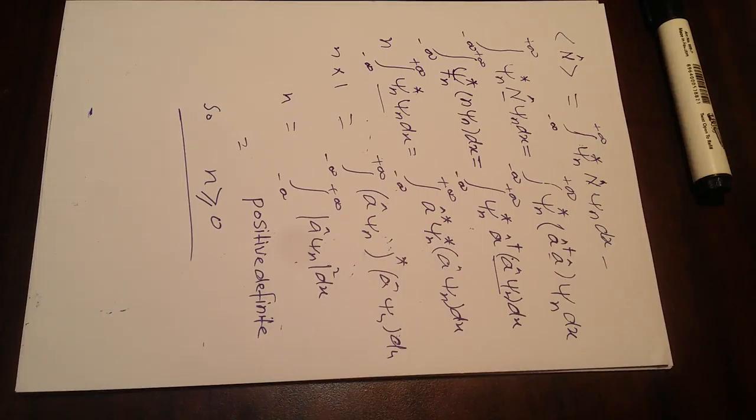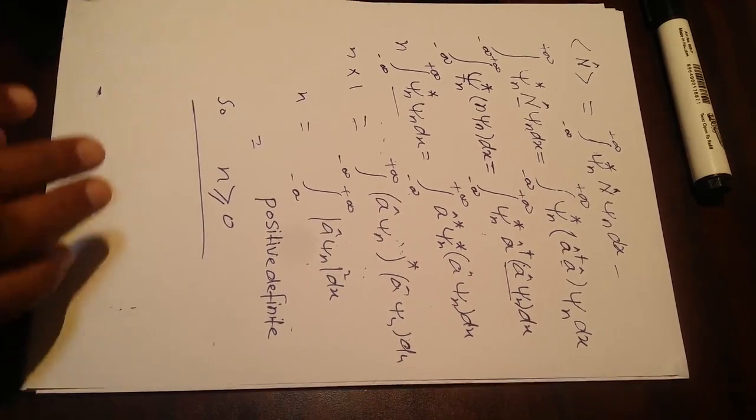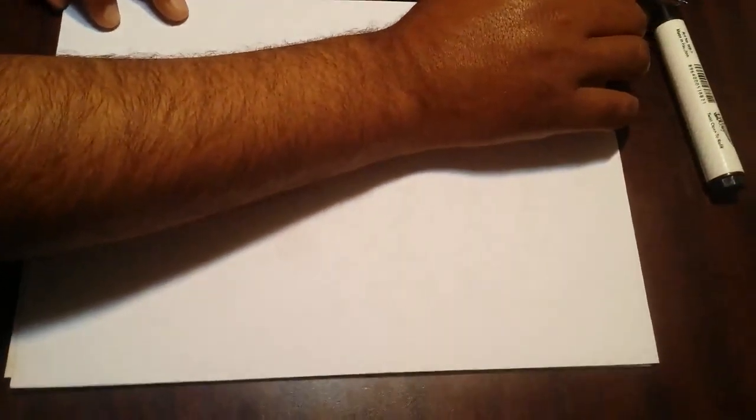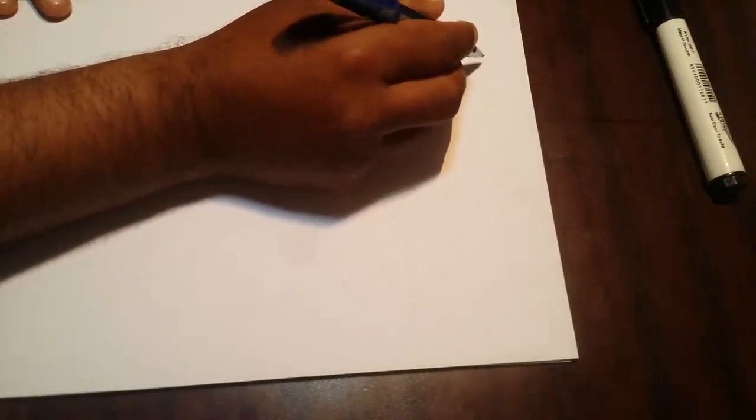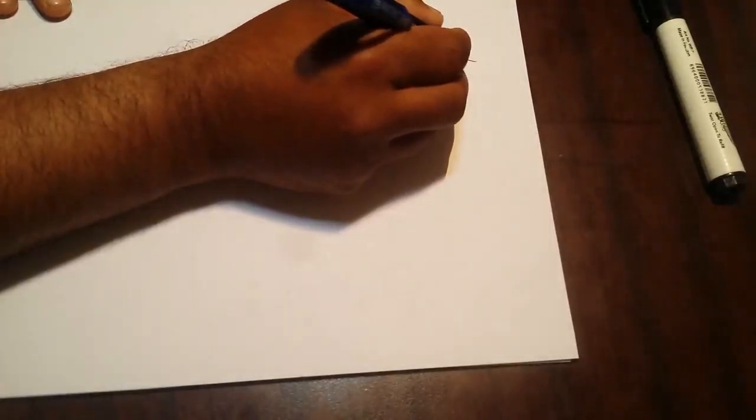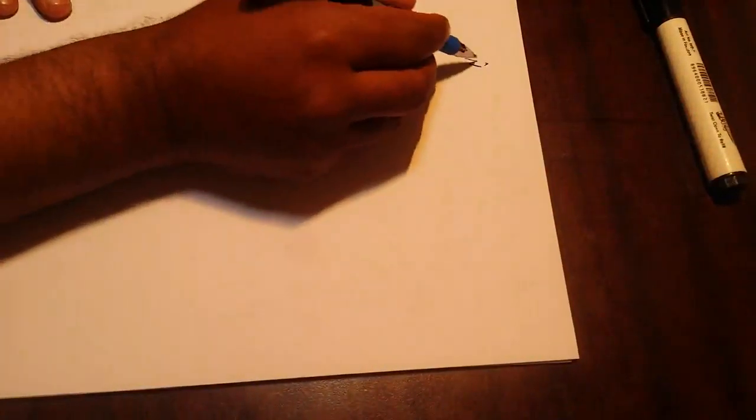Okay, now we prove some other results of commutators. Just like we know, we'll explore the action of operators a and a dagger, defining the commutator. Now just like we want to find [n, a].